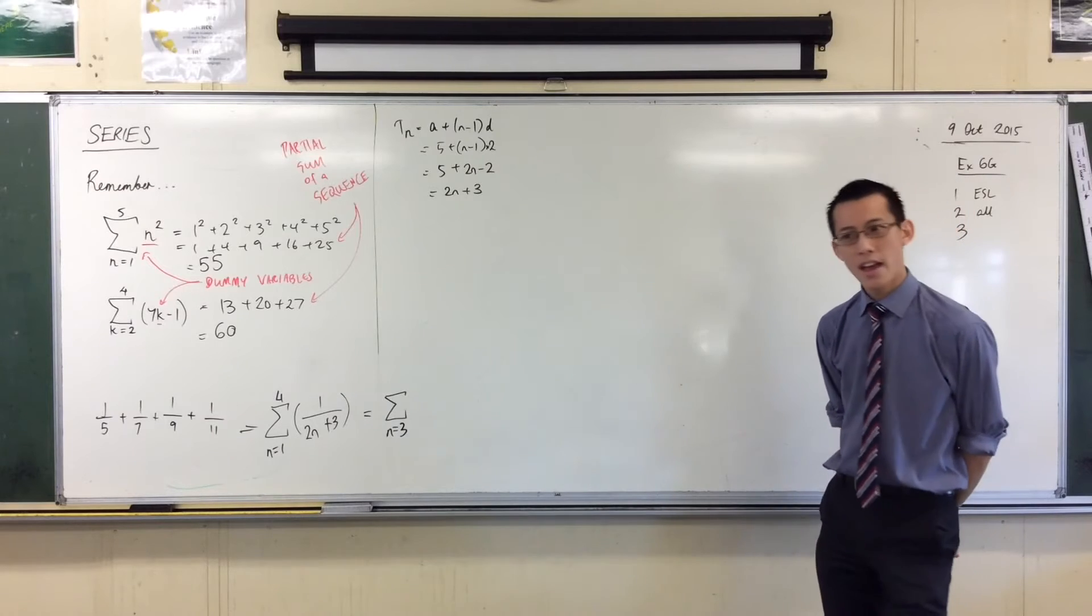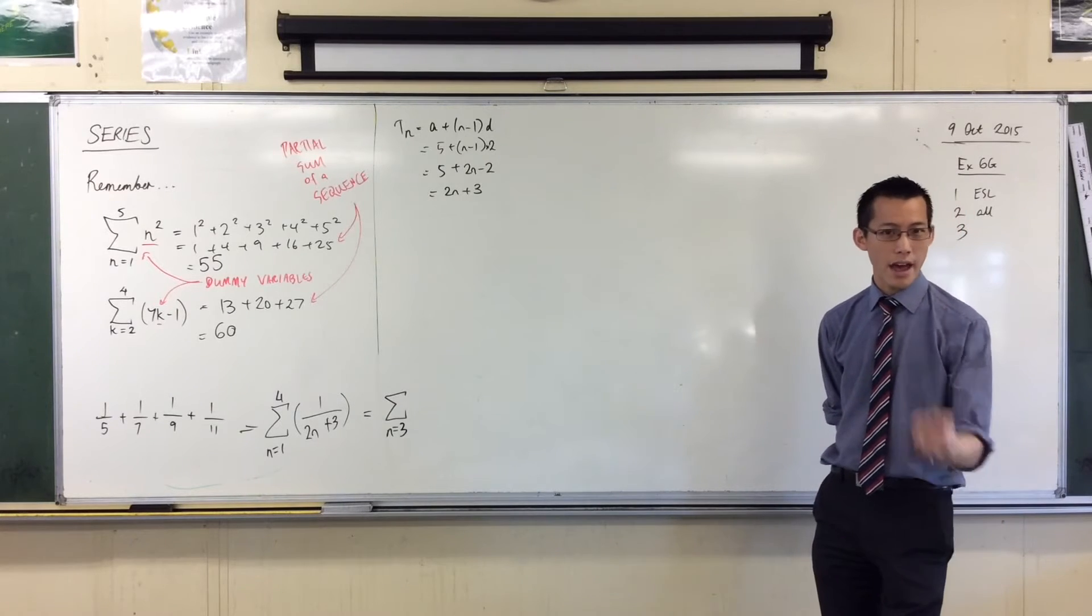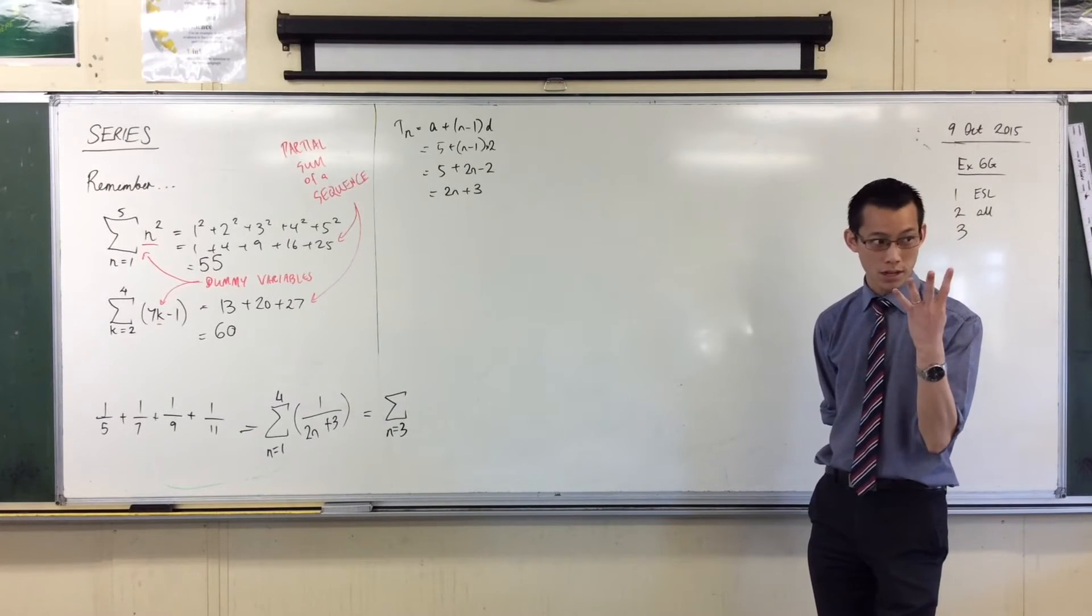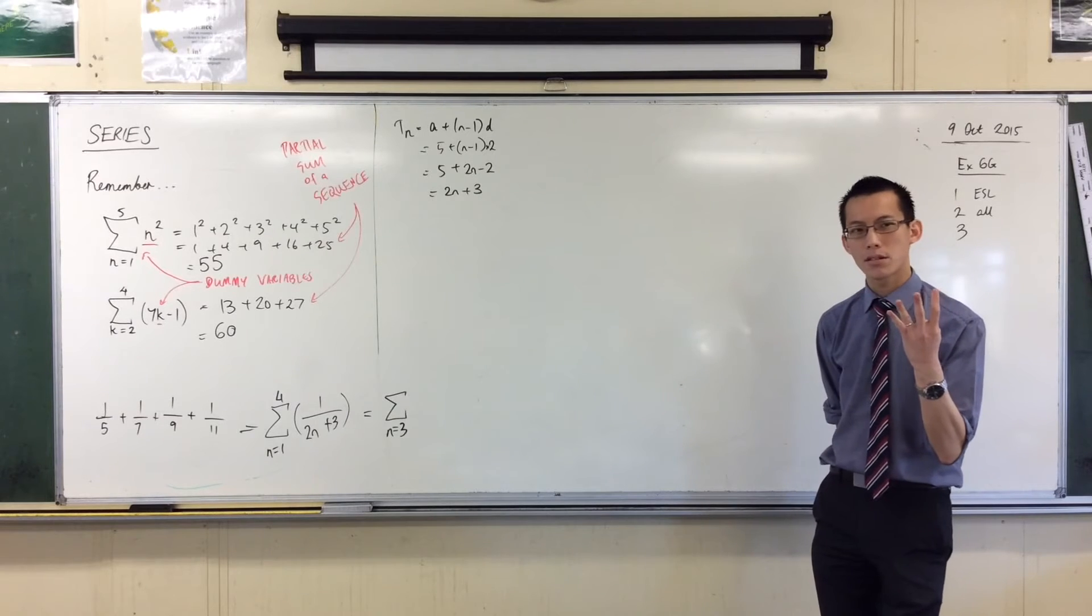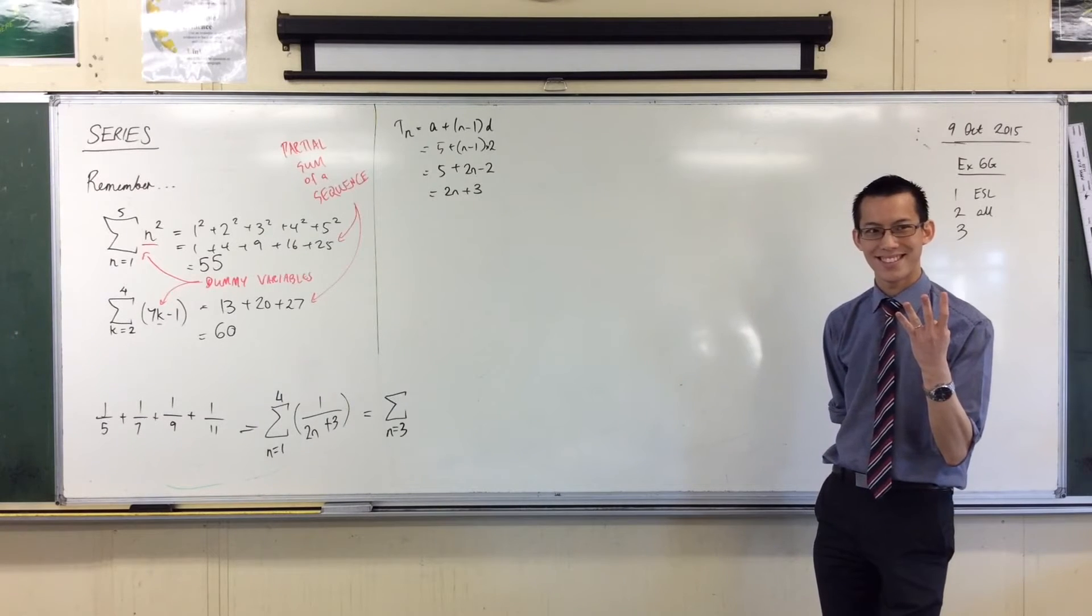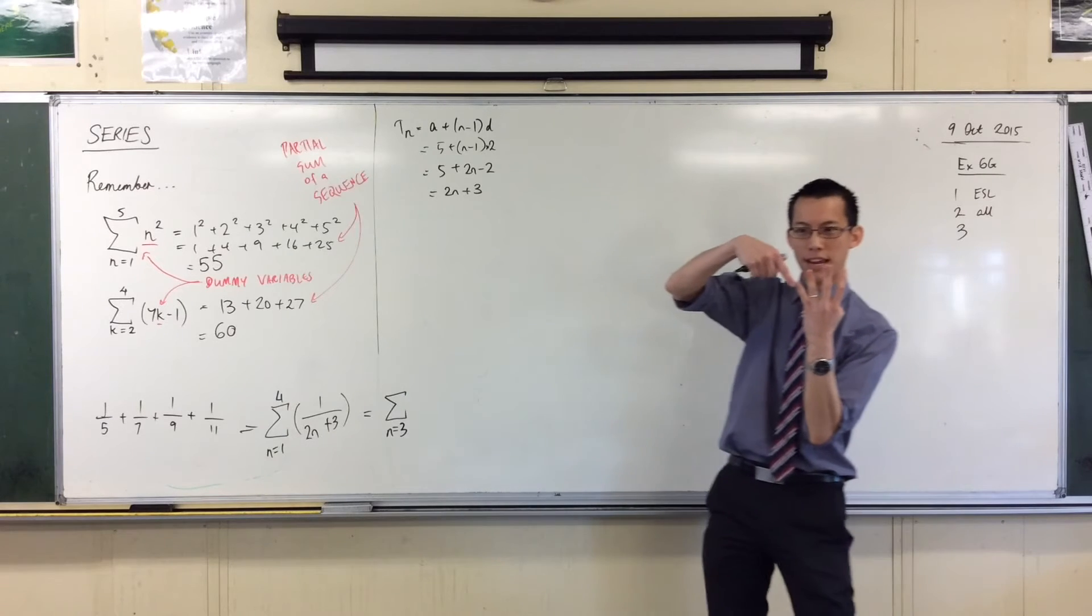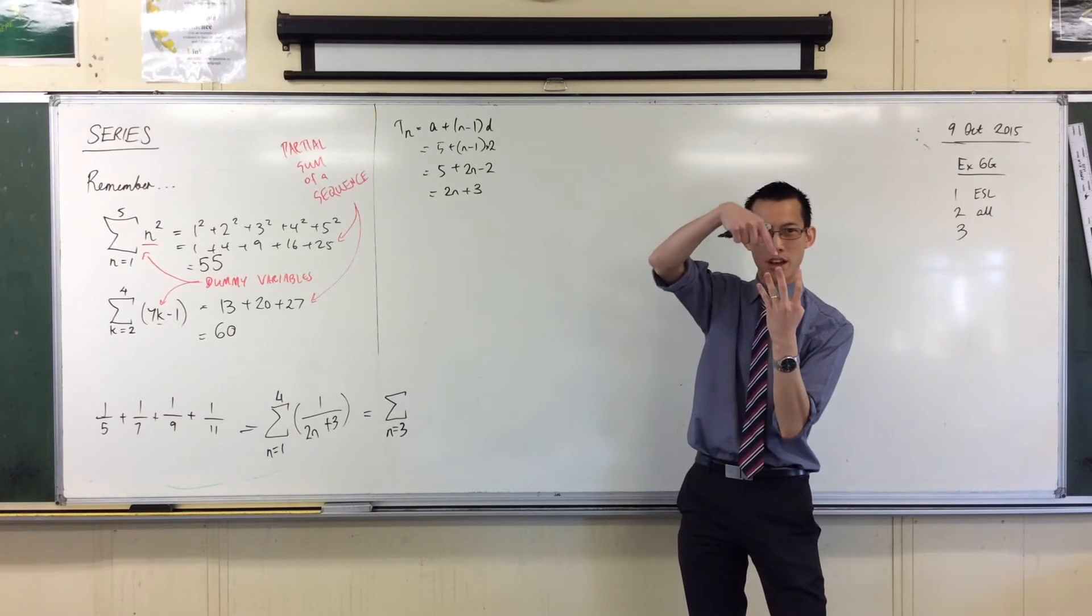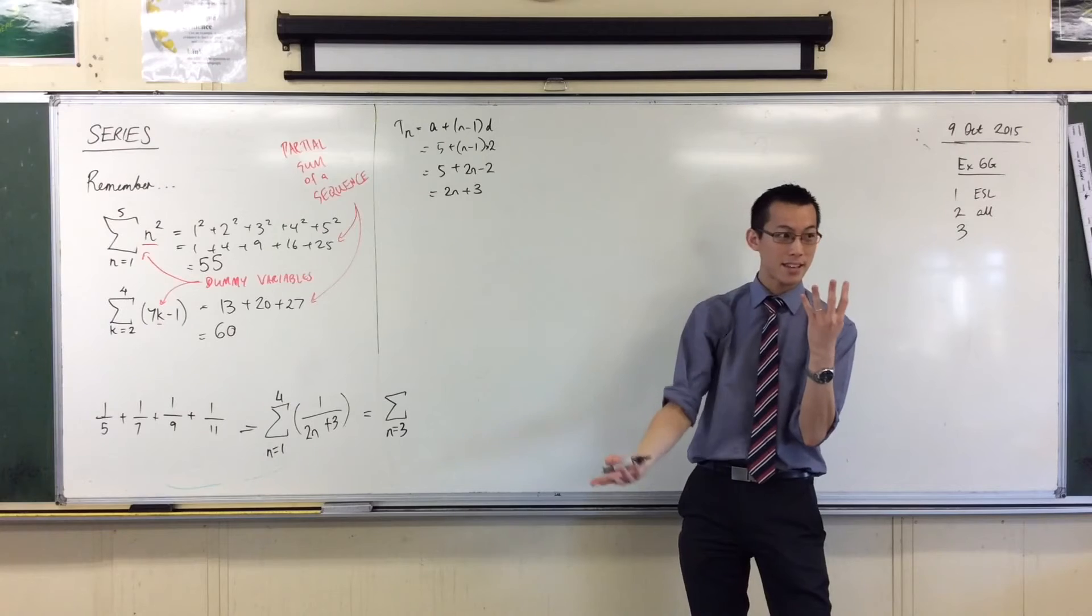Now, let me go through this process again. If I started at 3, and I have, count them, 1, 2, 3, 4 terms, what would be my last term? 7. 1 on 11. Term 3, term 4, term 5, term 6, right?